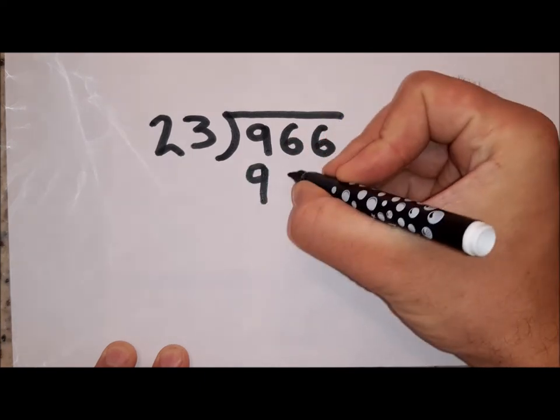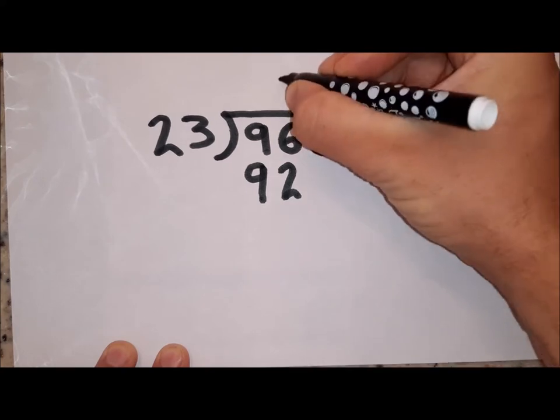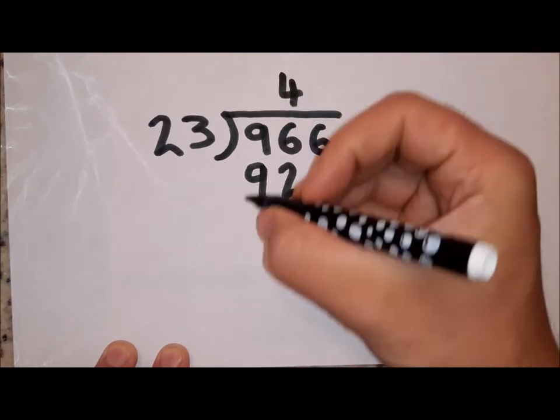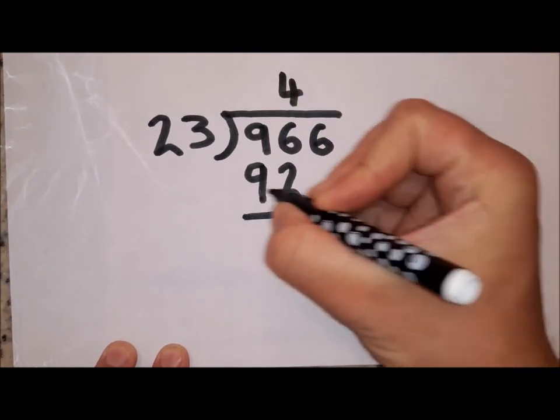23 plus 23 is 46, times that by 2 and I get 92. So I know that 4 lots of 23 is 96.